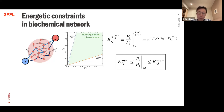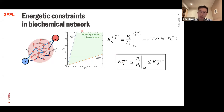Apart from the cycle affinity, the pathway picture tells us much more. We can maximize and minimize over all equilibrium constants identified across all reaction pathways. Intuitively, when the system reaches a stationary state, that stationary state should be bounded by the maximal equilibrium constant over all pathways and the minimal equilibrium constant over all pathways. These two bounds define a non-equilibrium phase space in the space spanned by the probabilities.